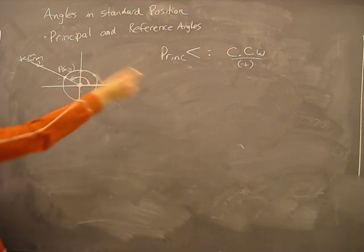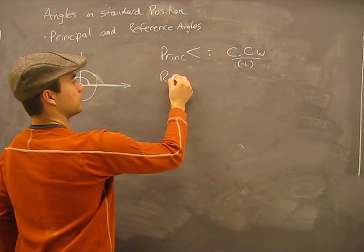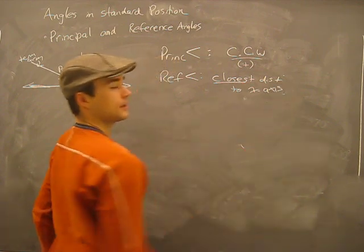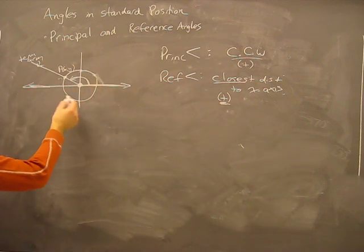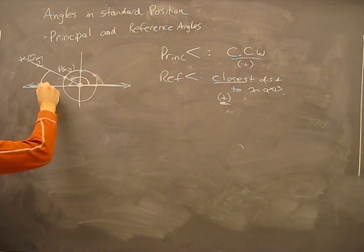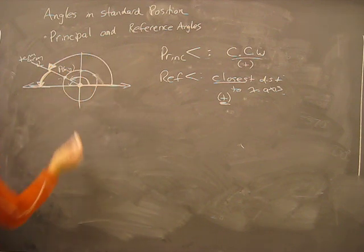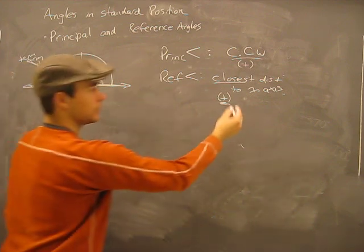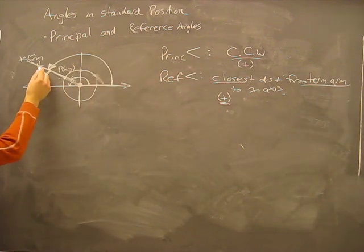There's something called the reference angle. The reference angle is the closest distance from the terminal arm to the x-axis. It's always measured positive. For example, here the reference angle would be this angular measurement — the closest distance from the terminal arm to the x-axis. So your reference angle is that.